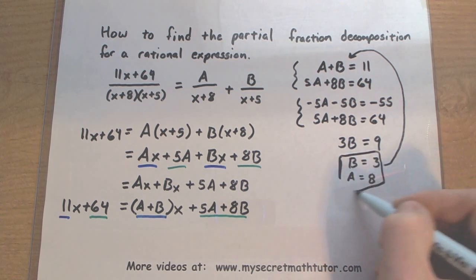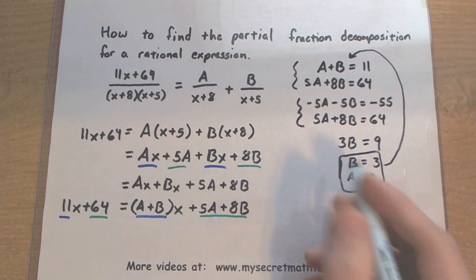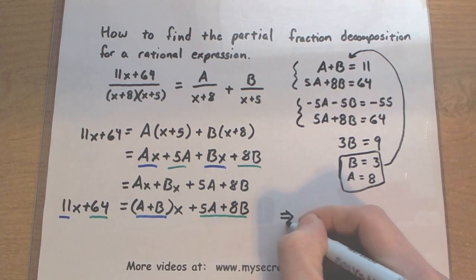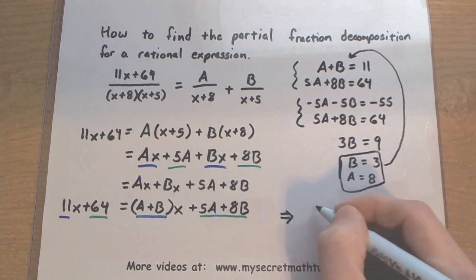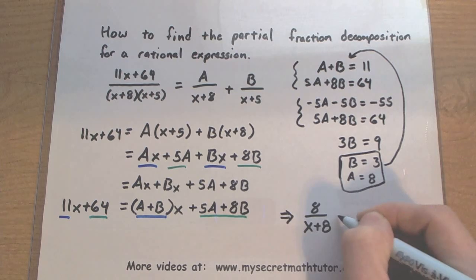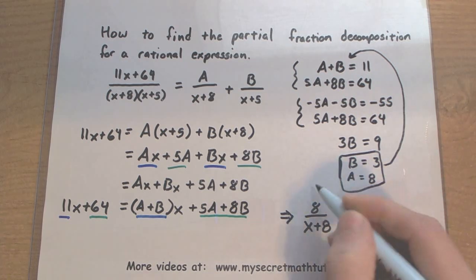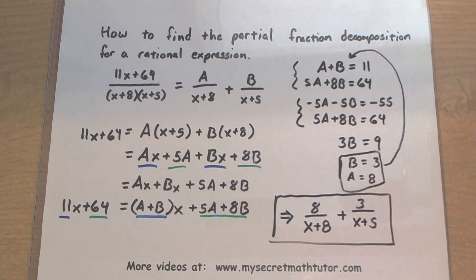We now know what A and B are. Remember where these originally came from - these were the tops of the fractions that we were splitting things up into. This tells us when we take our original fraction and we're trying to split it up, that it will split up into 8 over x plus 8 plus 3 over x plus 5. This is our partial fraction decomposition.